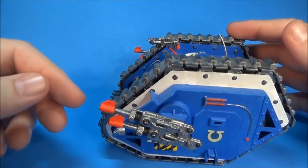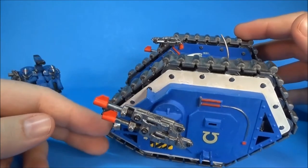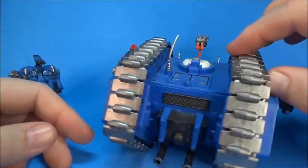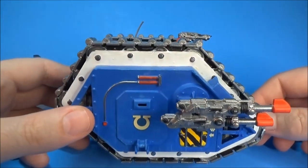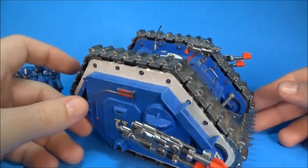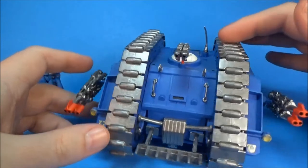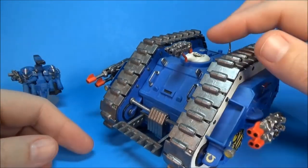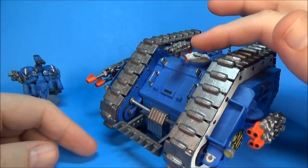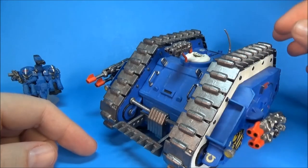bolters and whatnot red in second edition. Go back and look at your old codexes—lasguns, bolters, shuriken catapults, they're all red. But anyhow, the old Mark 1 Land Raider. Here's something very rare: heavy bolters that haven't snapped off.